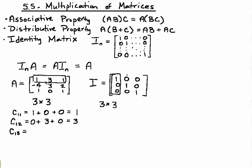And then multiplying the first row times the third column: 1 times 0 is 0, 3 times 0 is 0, and 1 times 1 is 1.